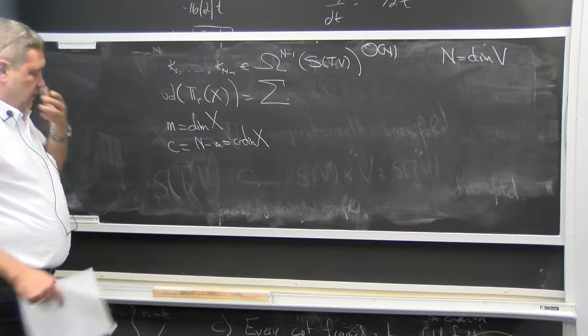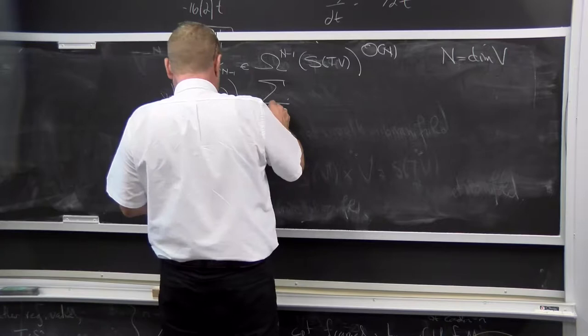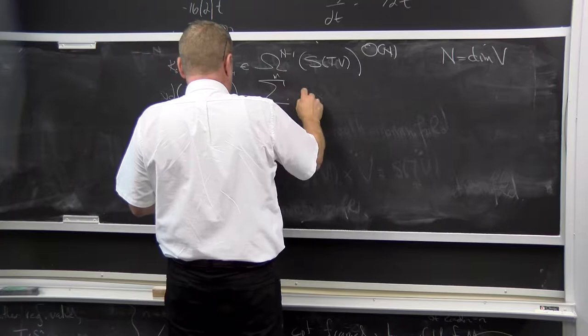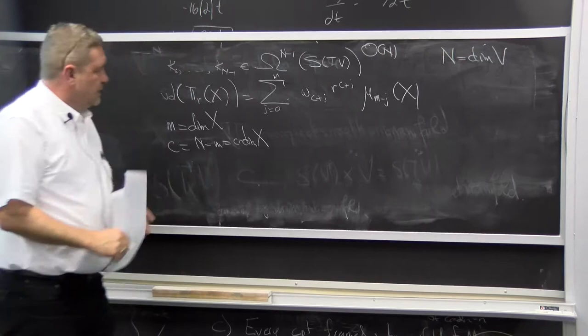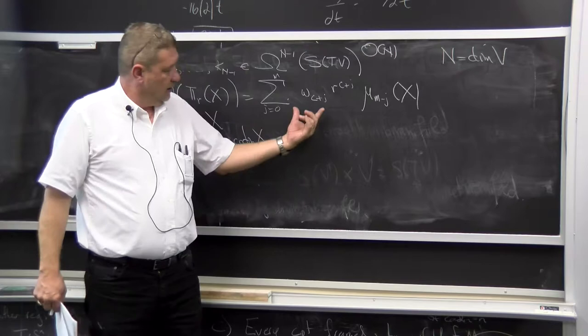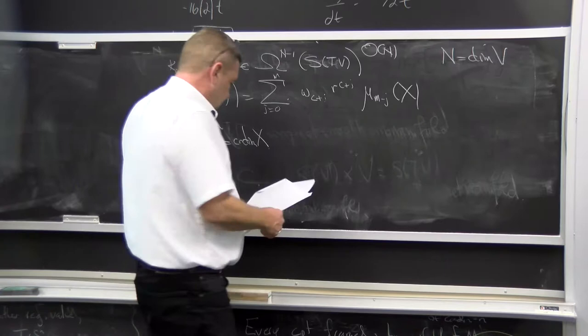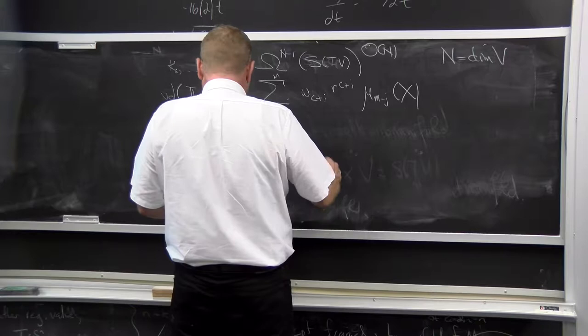We have a sum of the following type: sum from j = 0 to m of ω_{c+j} r^{c+j} μ_{m−j}(X). So it's a polynomial — the lowest degree term has degree equal to the codimension — and these ω factors are the volumes of unit balls of the corresponding dimensions.